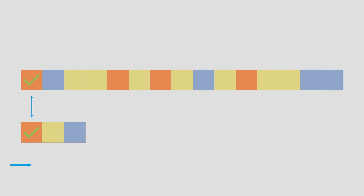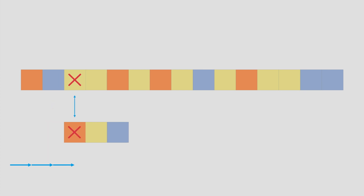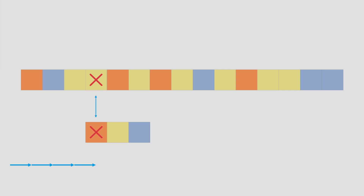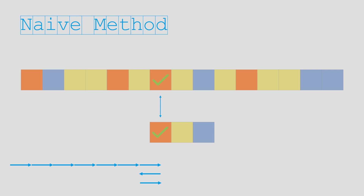The first instinct that everyone would have is to compare every color on the tape to orange. Once we find a temporary match, we then compare the color after it to yellow. If that doesn't work out, we start from the next color on the tape again until we find a match. This method can be referred to as the naive method when solving string matching problems.